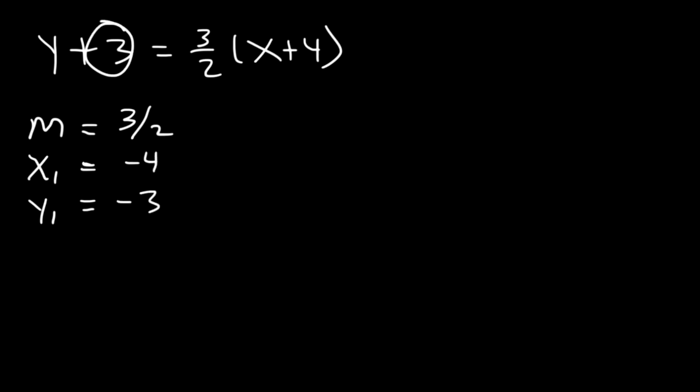Basically, you just got to change the sign of these numbers. If you see a plus 4, make it a negative 4. If you see a positive 3, make it a negative 3. If you see a negative 3, make it a positive 3. So just reverse the signs, and you're going to get the point, which is negative 4 comma negative 3.